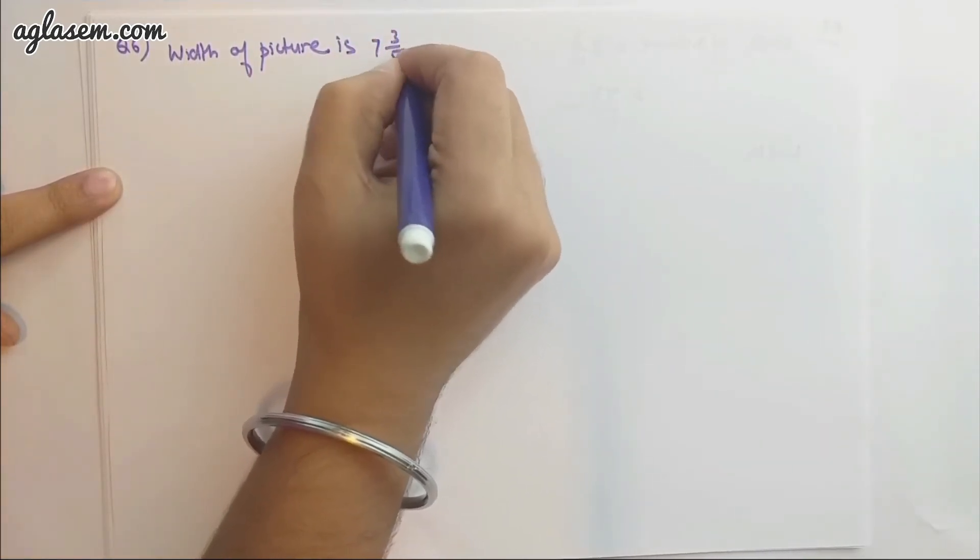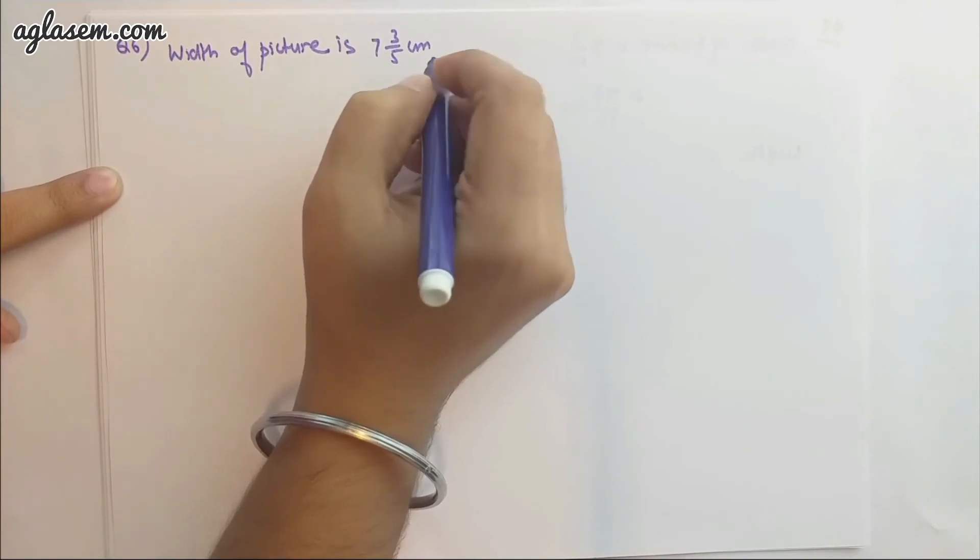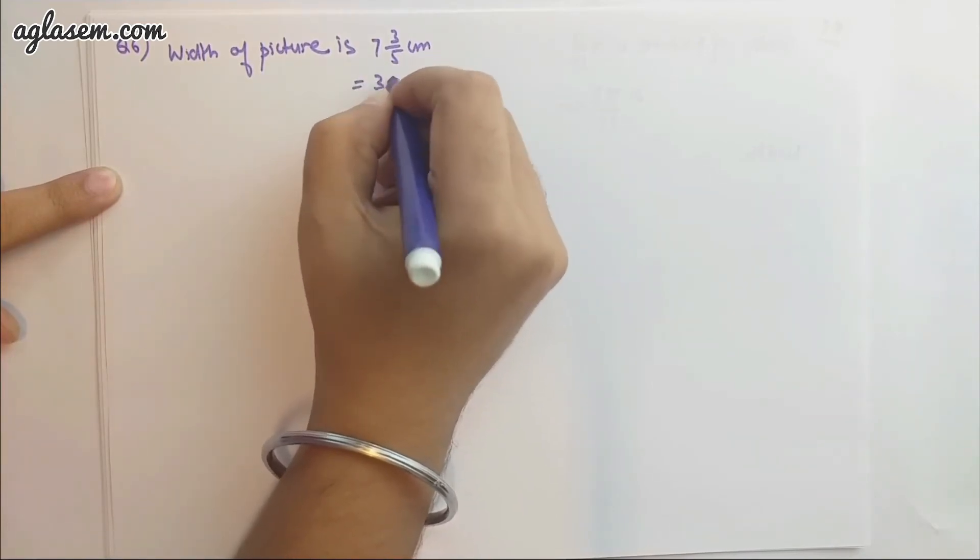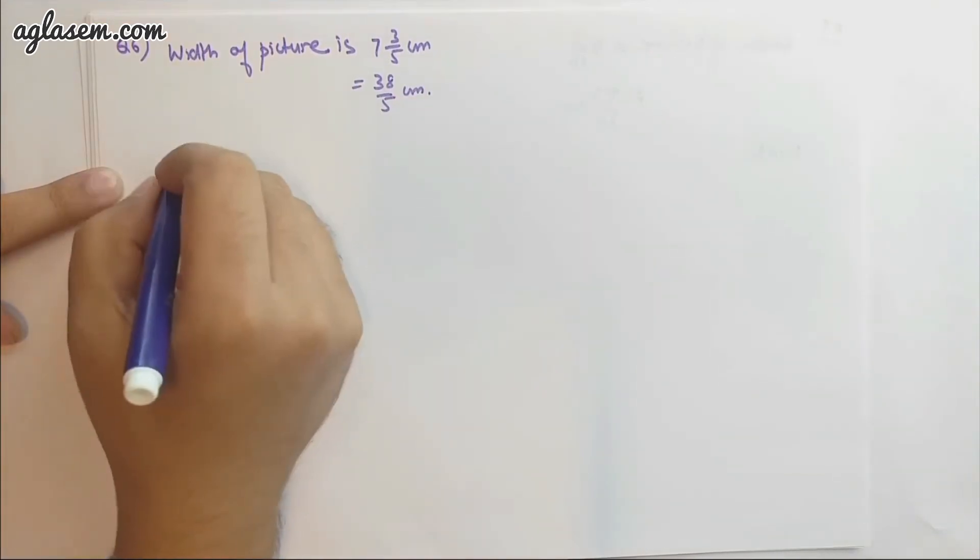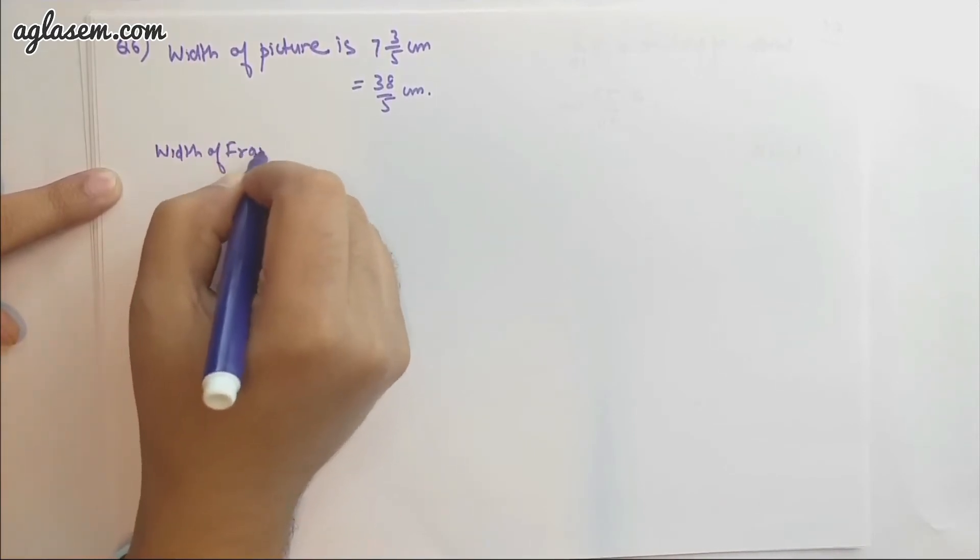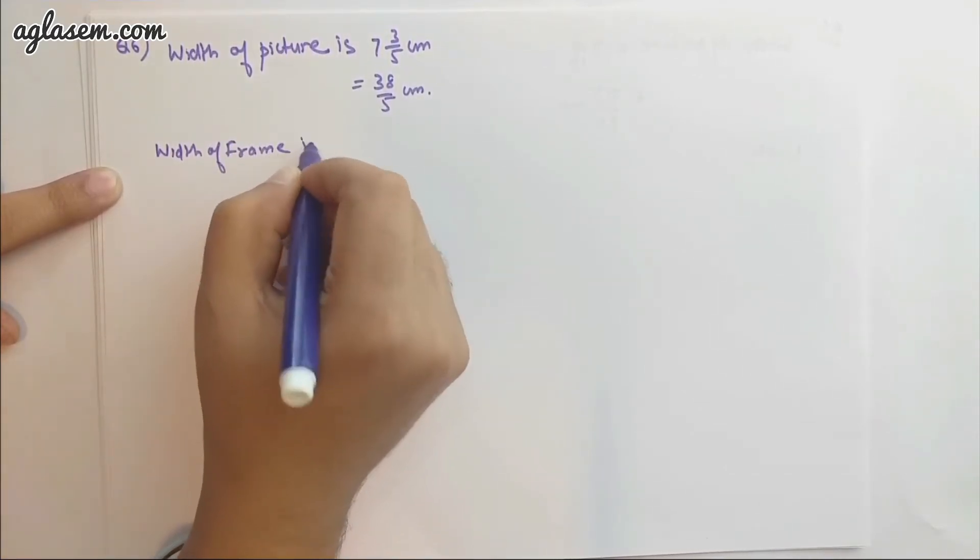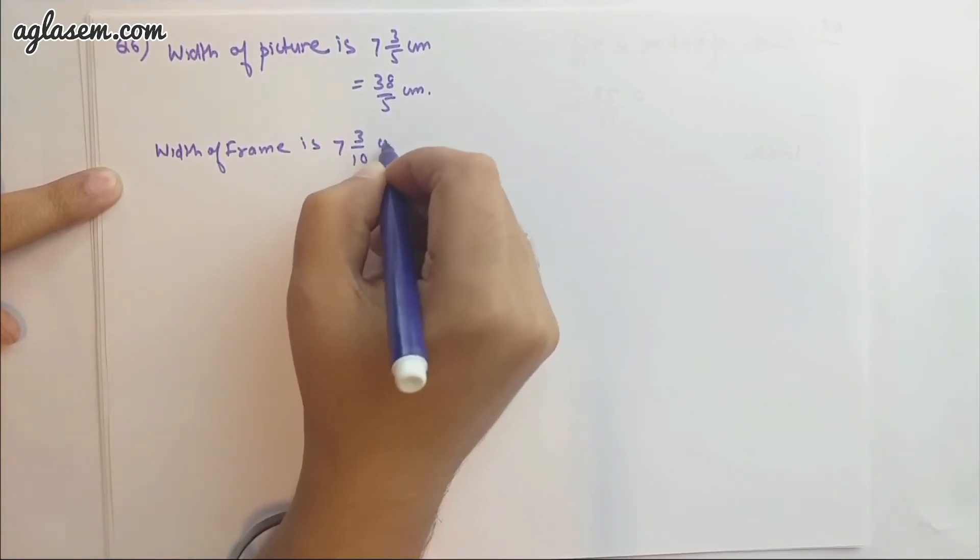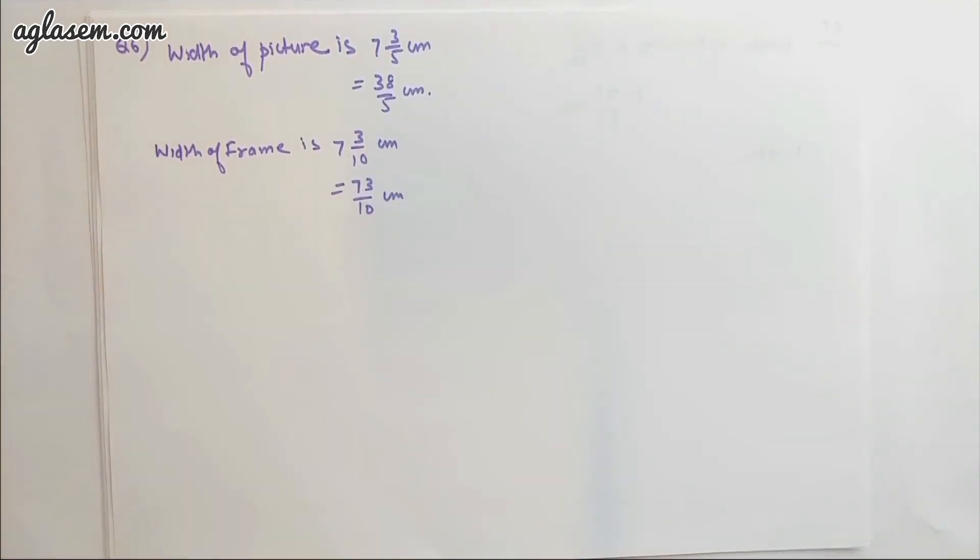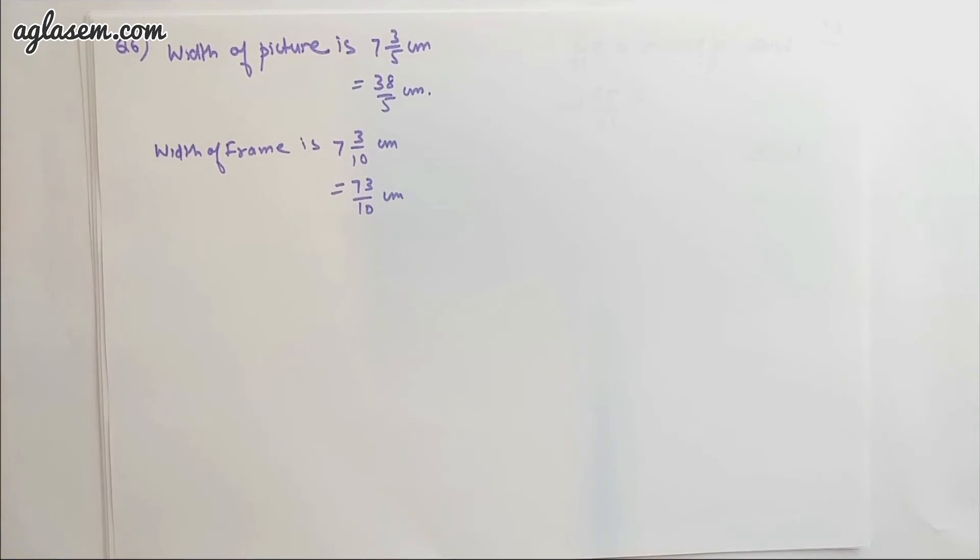The width of the picture is 7 3/5 centimeter, that means actually it's 38/5 centimeter. They want to put this picture into a frame, and the width of the frame is 7 3/10 centimeter, that is 73/10 centimeter. If you want to put a picture in a frame...